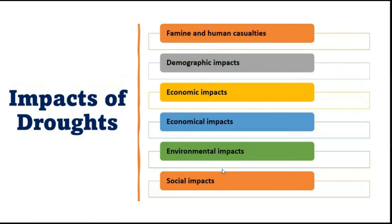On the global level, certain regions are highly hit by drought. The Sahel region extends through the hot and dry areas below the Sahara, covering countries like Senegal, Mali, Upper Volta, Niger, Nigeria, Chad, Uganda, and Ethiopia. Australia is also commonly hit by droughts. In Asia, countries including Afghanistan, Iran, Pakistan, India, Myanmar, Nepal, Sri Lanka, Bangladesh, and parts of China are highly affected by droughts.